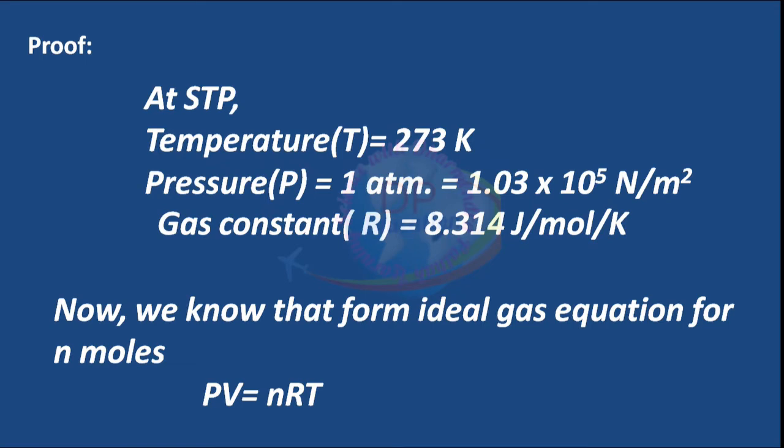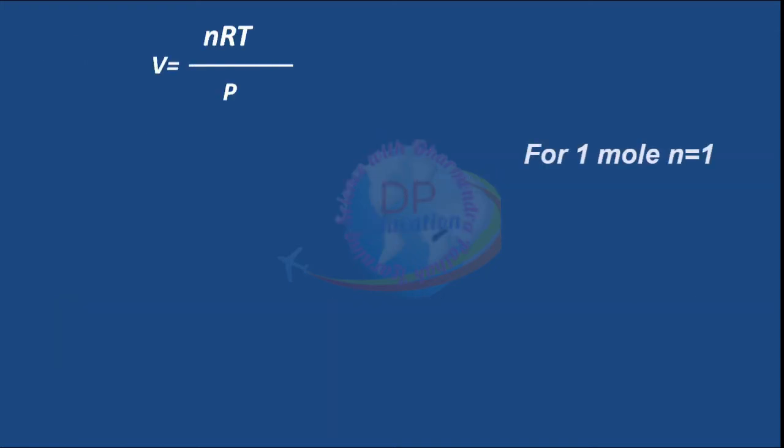Now we know that from ideal gas equation for N mole, PV equals NRT. Or V equals NRT upon P.